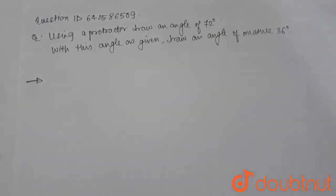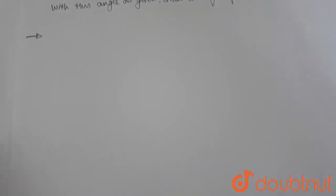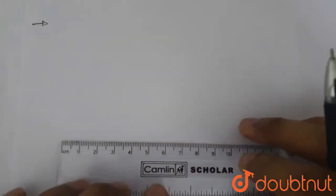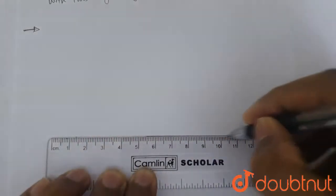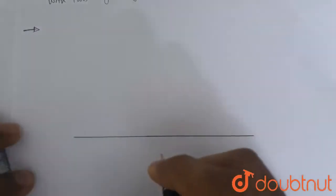And hence we will get this angle. So we start. We first make the base of the angle with 72 degrees. This is the base.